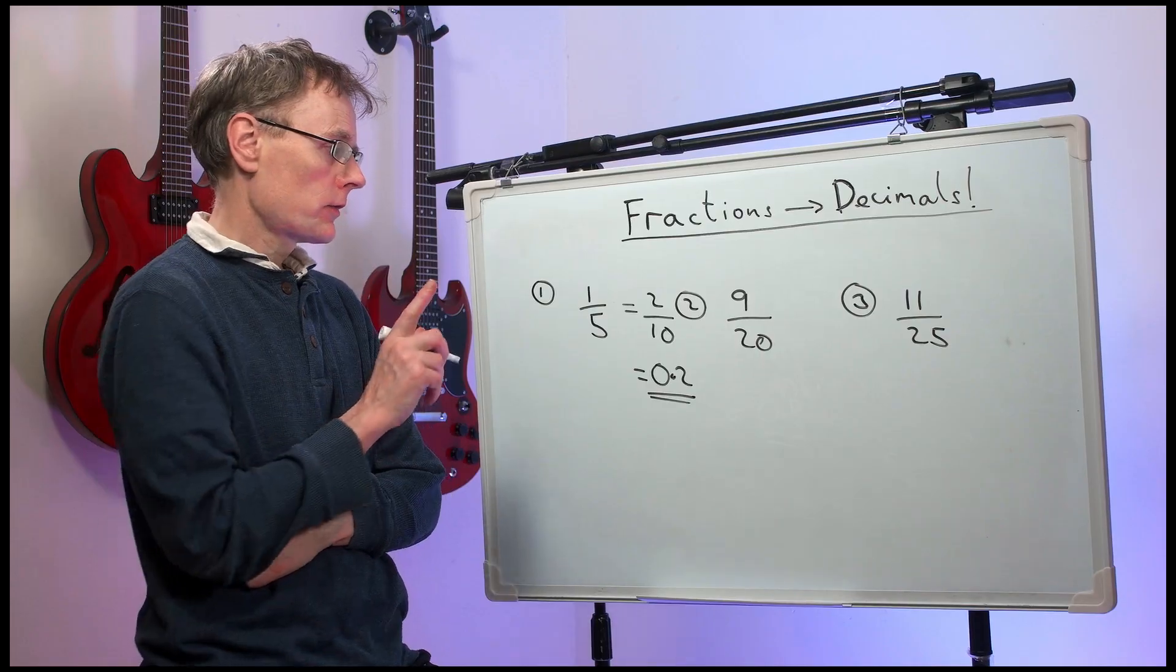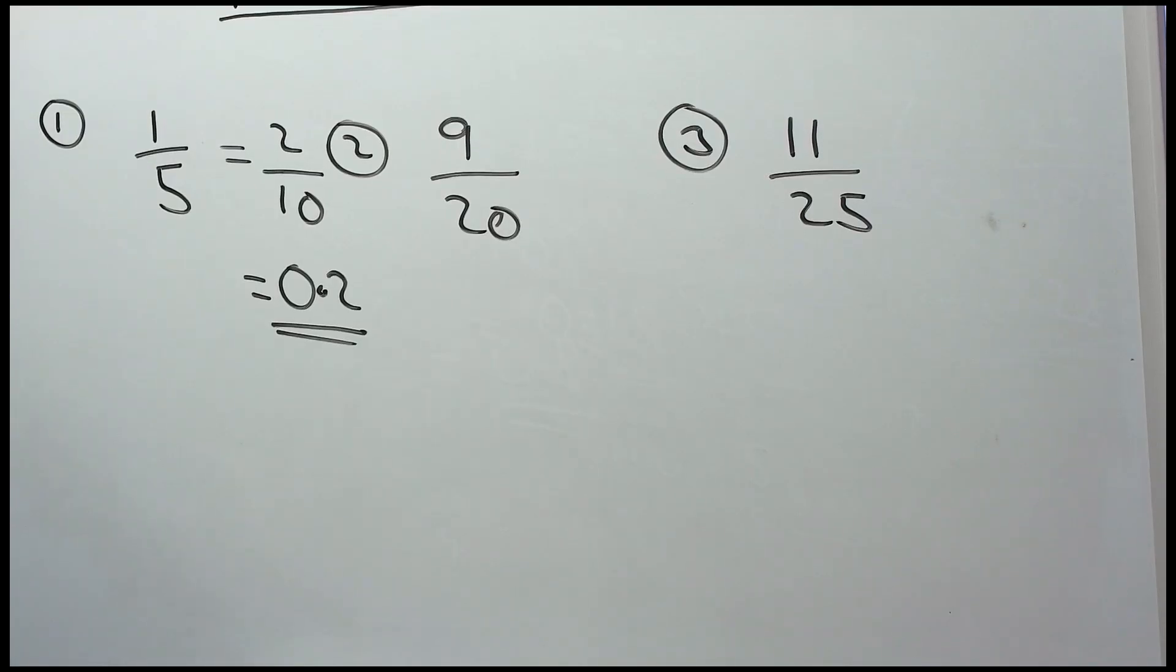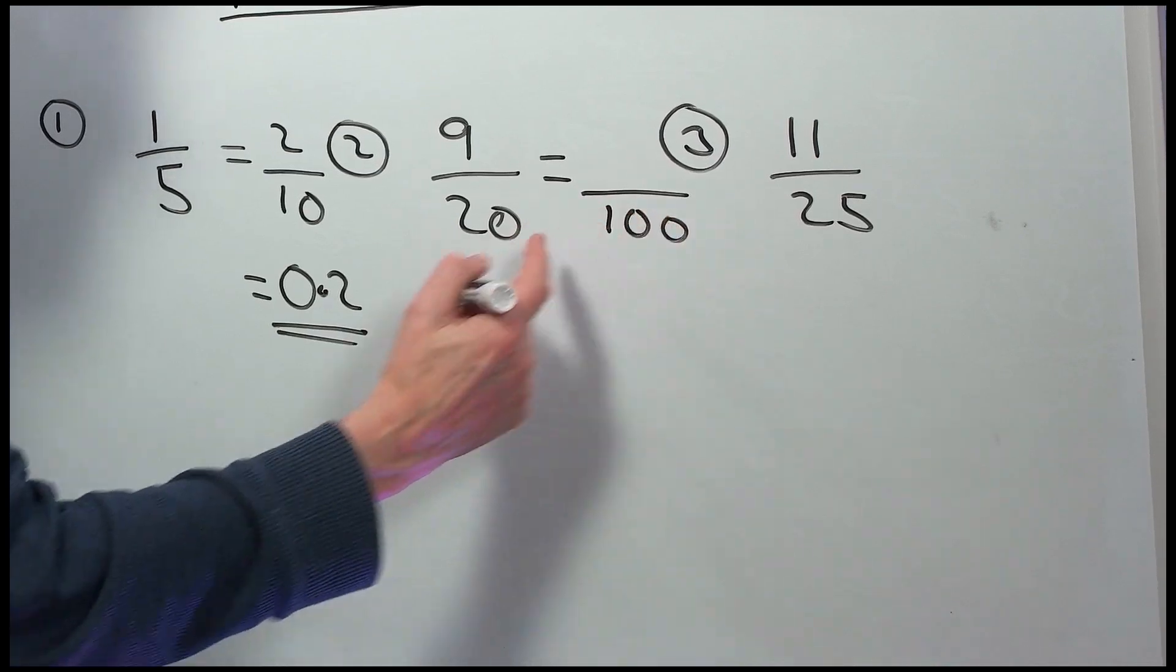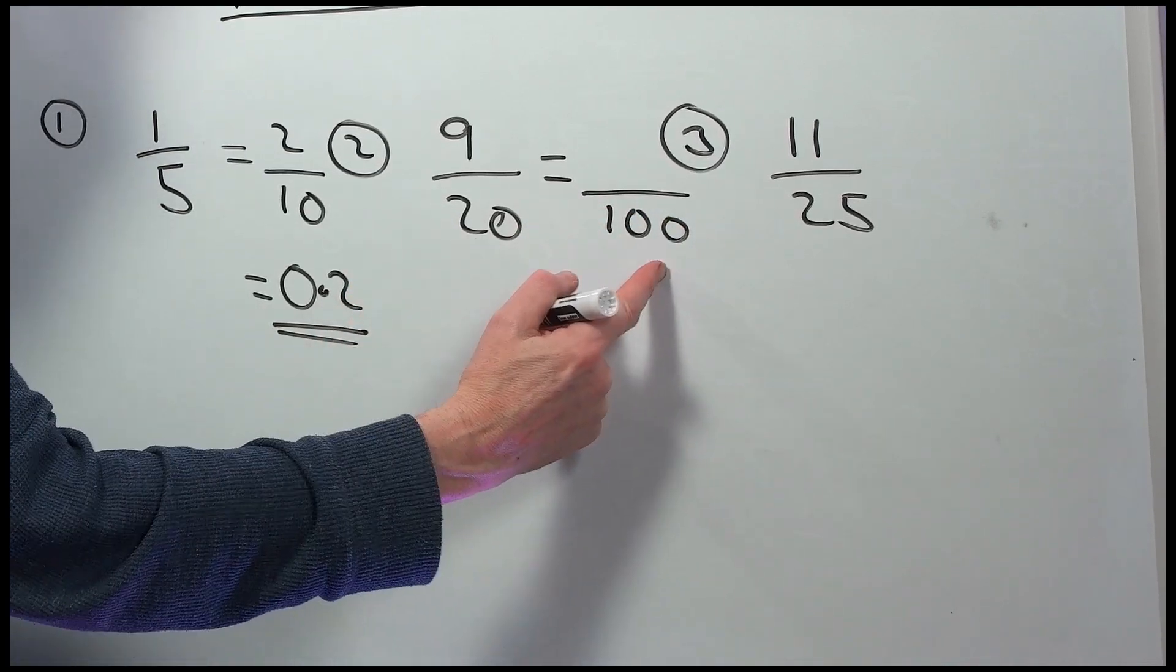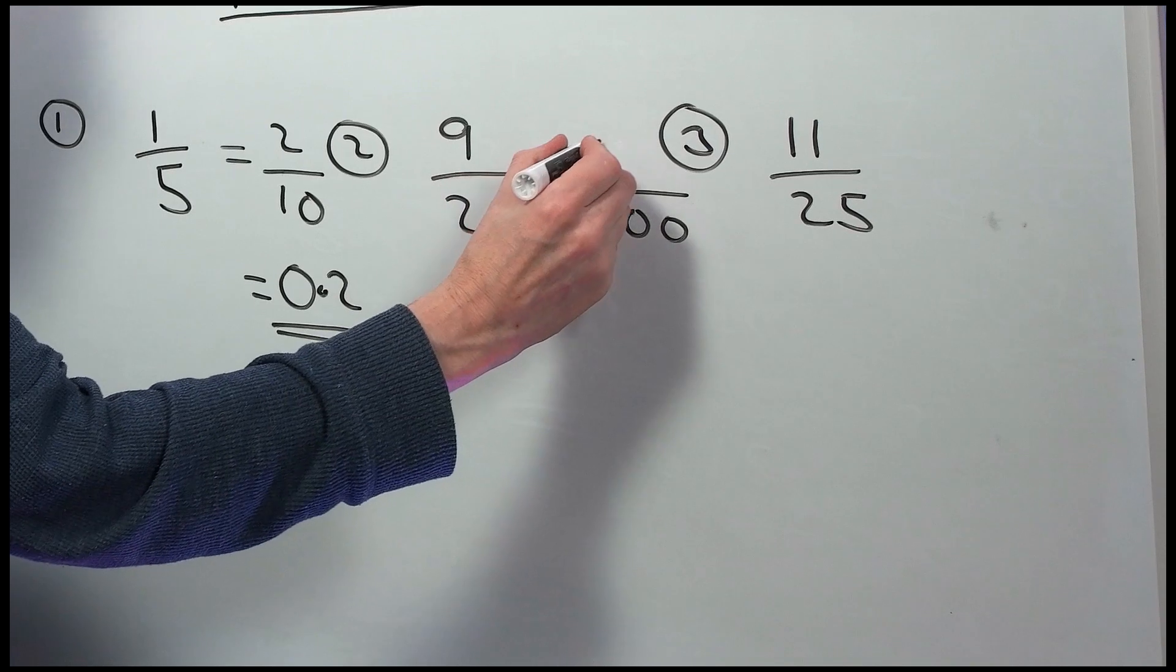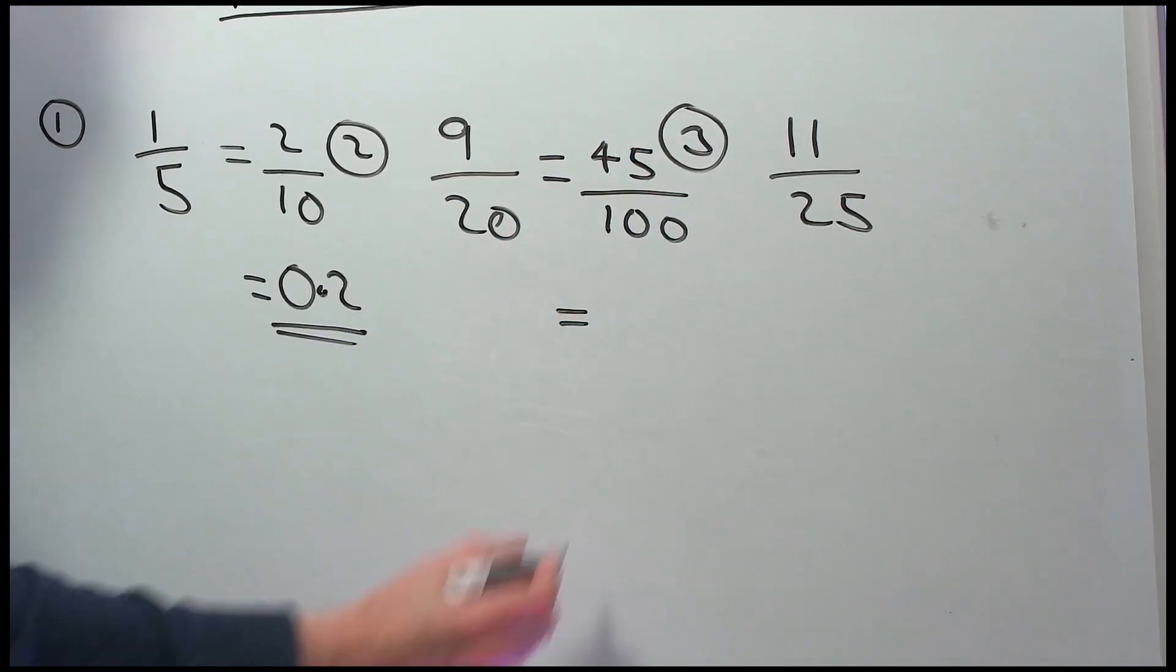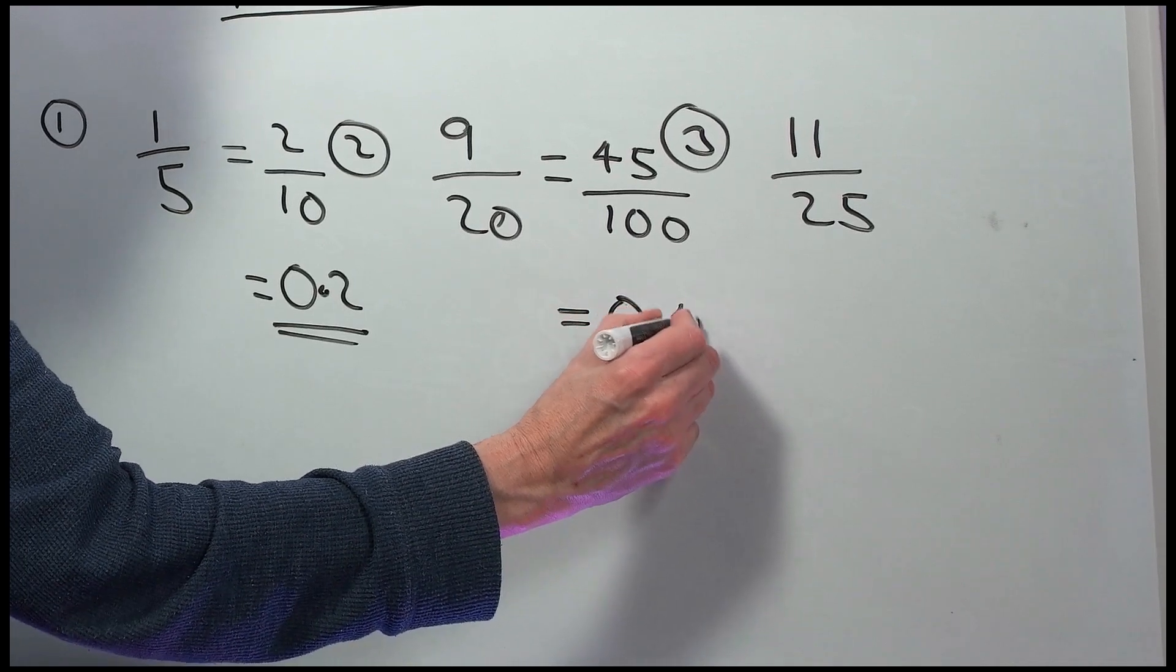Number two, nine-twentieths. We can change twentieths to be out of a hundred. Twenty into a hundred goes five times. So, we're multiplying the bottom by five. We multiply the top by five. Forty-five hundredths is 0.45.